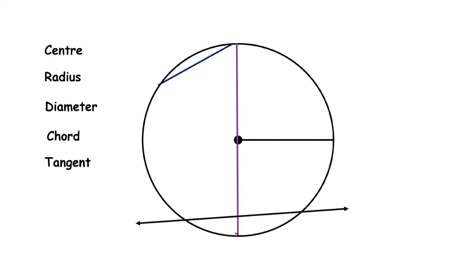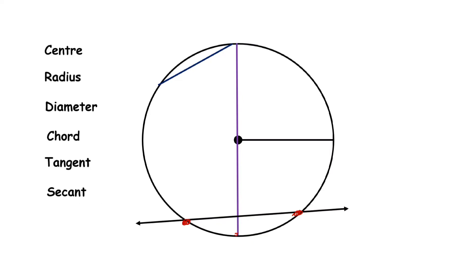Now you can see here we have a line which intersects the circle at two different points. So this line is a secant of the circle.